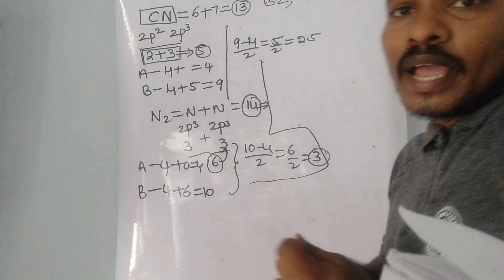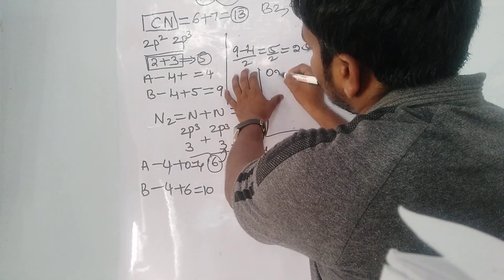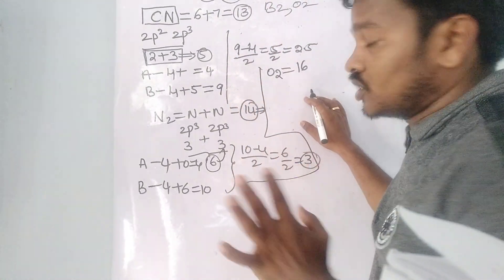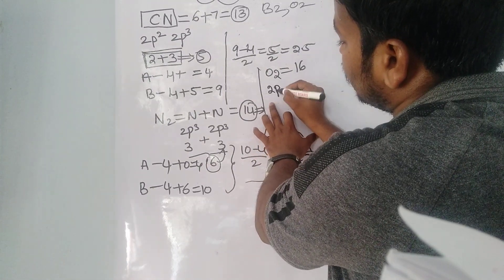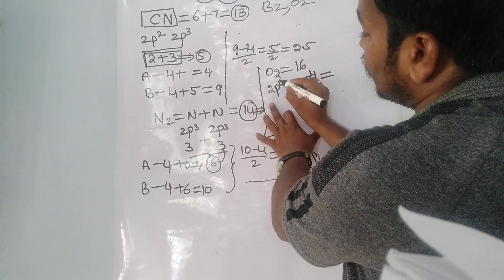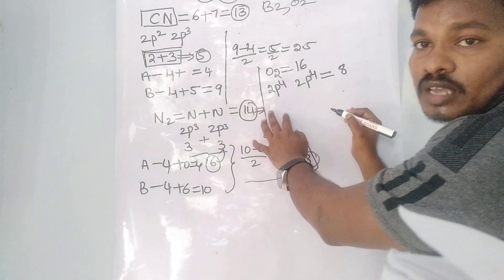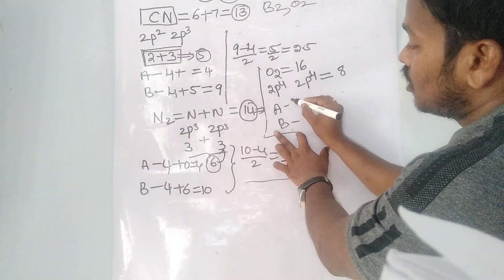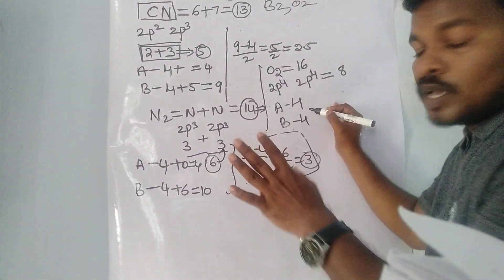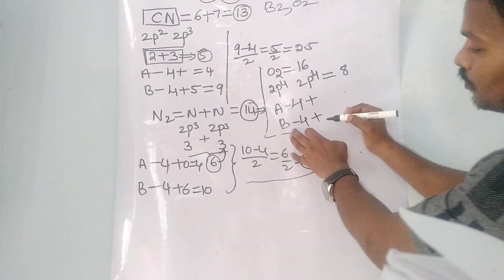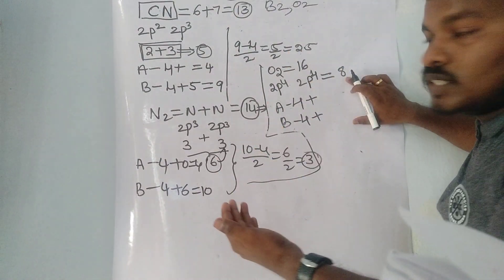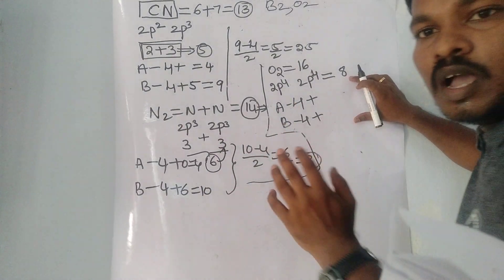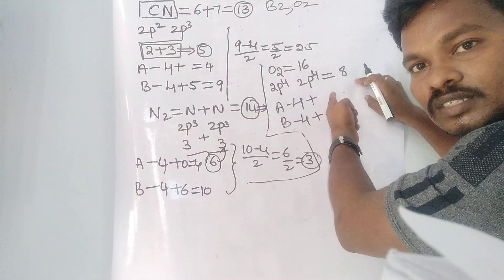Next, consider a 16-electron system. A 16-electron system is paramagnetic in nature — this is an exception. Write the p-subshell electronic configuration: 2p4 + 2p4. Total p-electrons: 4 + 4 = 8. Anti-bonding = 4 (fixed), bonding = 4 (fixed). Now, 8 is more than 6. In the previous examples the p-electron count was at or below 6, but here it exceeds 6.